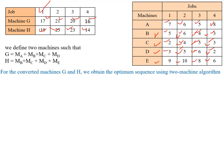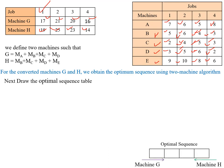We converted the problem into 2 machines — G and H — and will obtain the optimum sequence using the 2-machine algorithm. For this, first we draw the optimum sequence table with 4 columns, equal to the number of jobs. Jobs for machine G are filled from the start of the table, and jobs for machine H are filled from the end of the table.